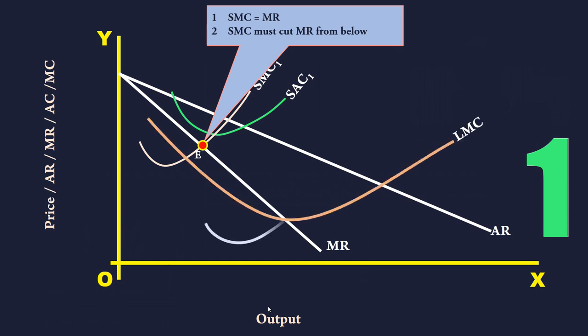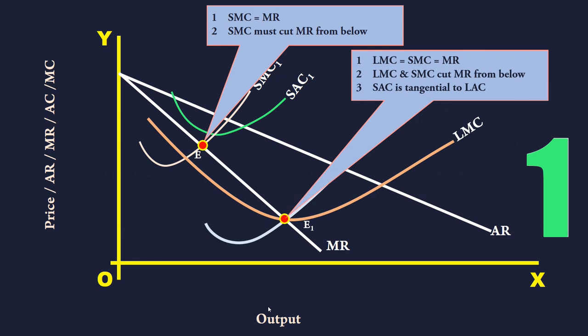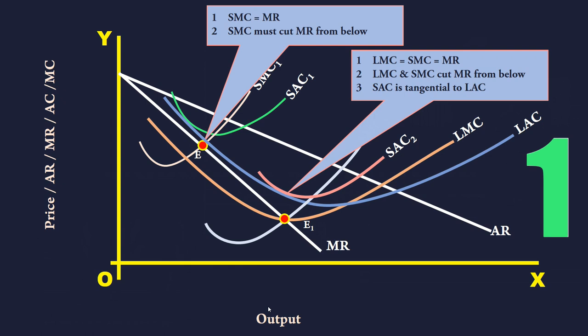In the long-run, the monopoly firm is in equilibrium when the following three conditions are satisfied: 1. Long-run marginal cost must be equal to short-run marginal cost and both must be equal to marginal revenue. 2. Long-run marginal cost curve and short-run marginal cost curve must cut the marginal revenue curve from below. 3. The short-run average cost curve must be tangential to the long-run average cost curve.